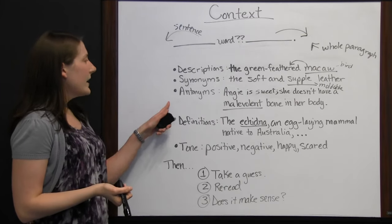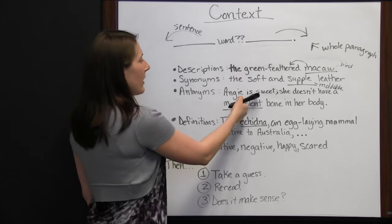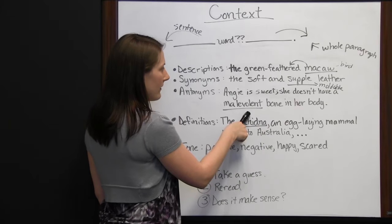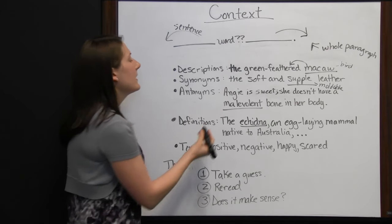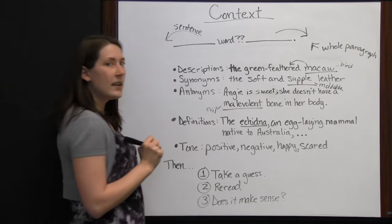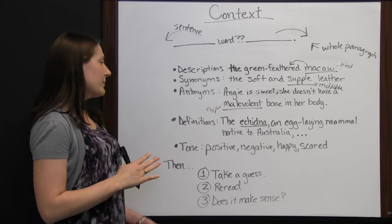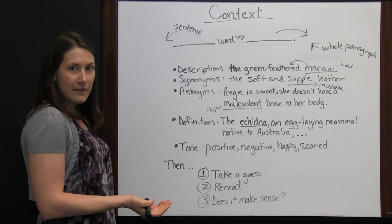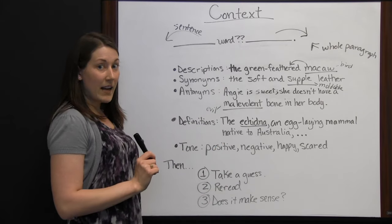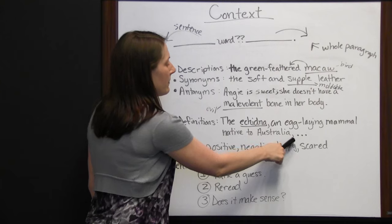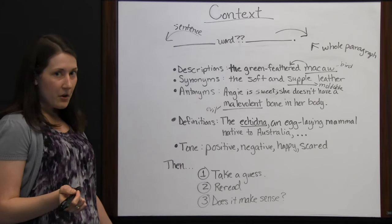Another clue you can look for are antonyms. 'Angie is sweet. She doesn't have a malevolent bone in her body.' You may not know what malevolent means, but if she isn't malevolent and she is sweet, then malevolent must be something bad — the opposite of sweet. In reality, malevolent means evil. Another clue is definitions — sometimes the sentence before, after, or part of the same sentence will just give you the definition. For instance: 'the echidna, an egg-laying mammal native to Australia' — the definition is right there in the commas.